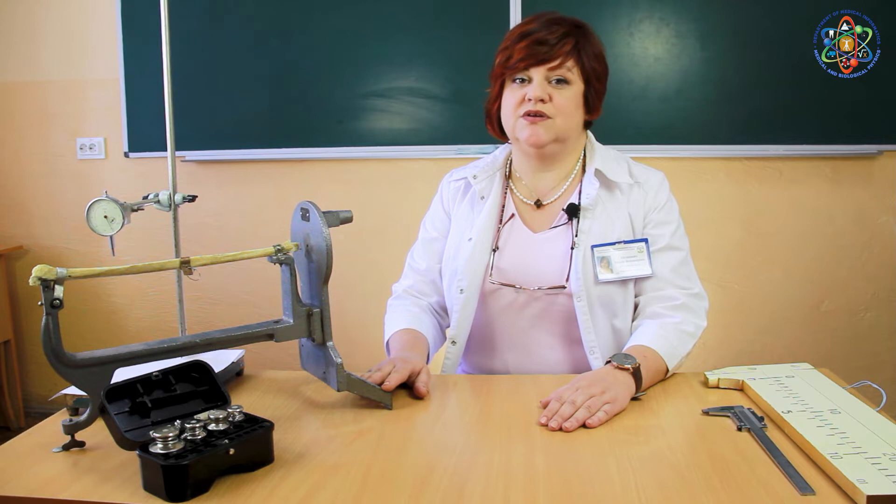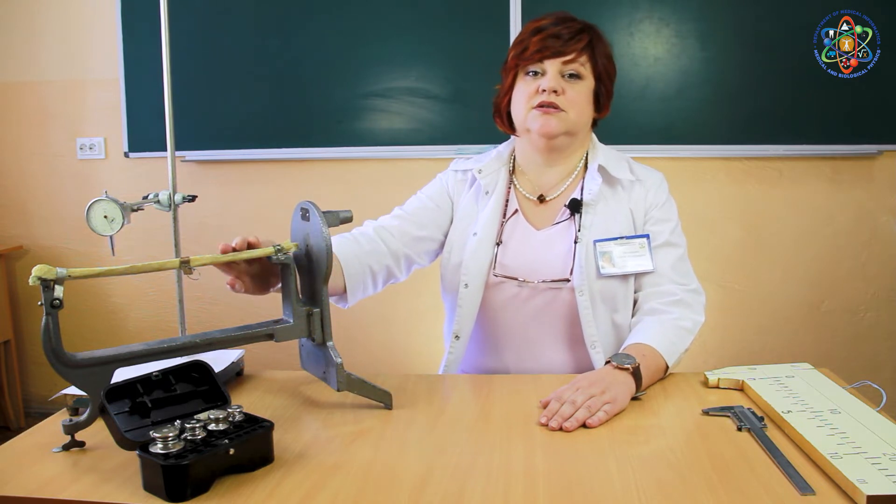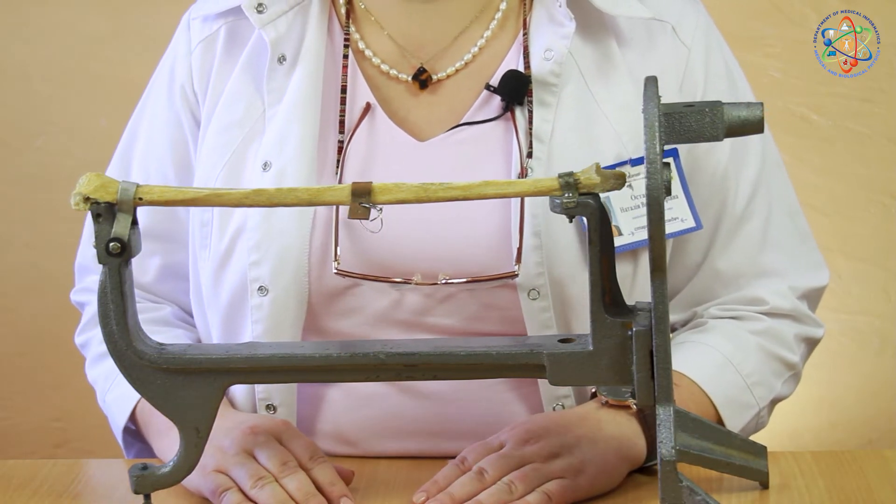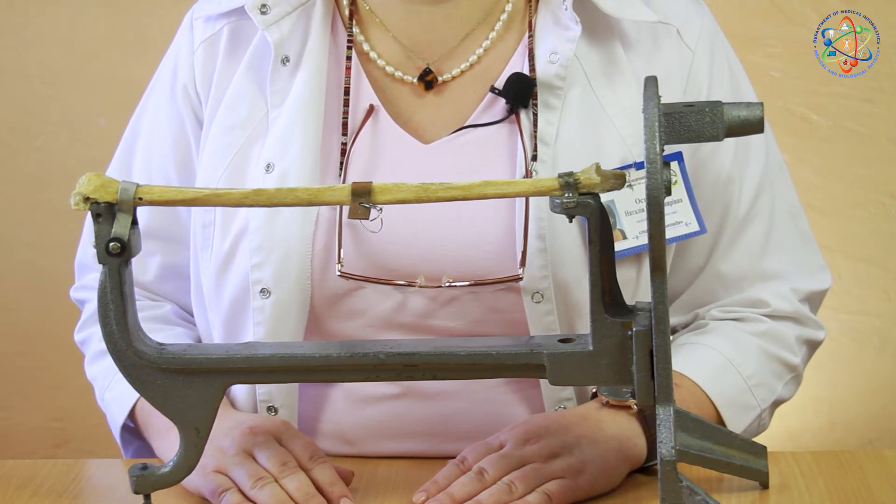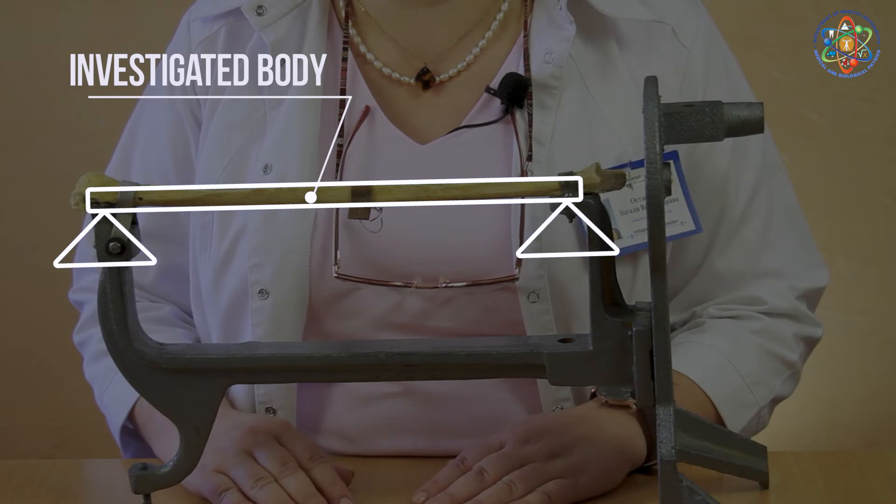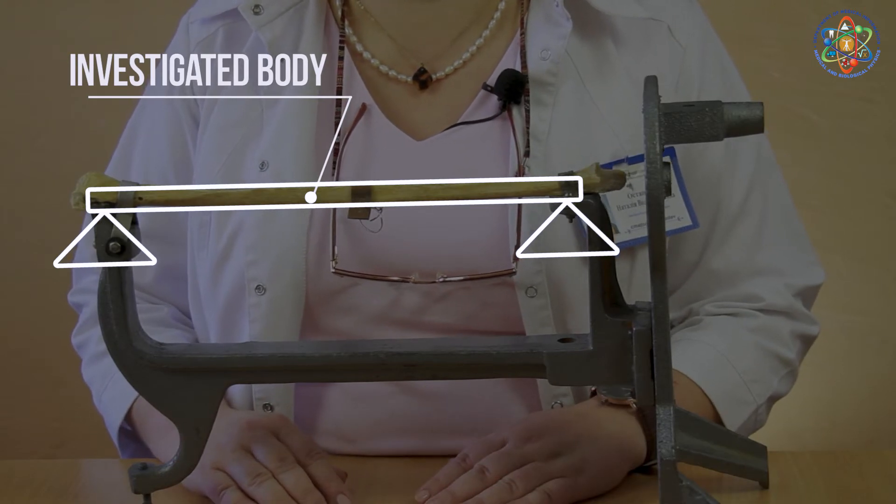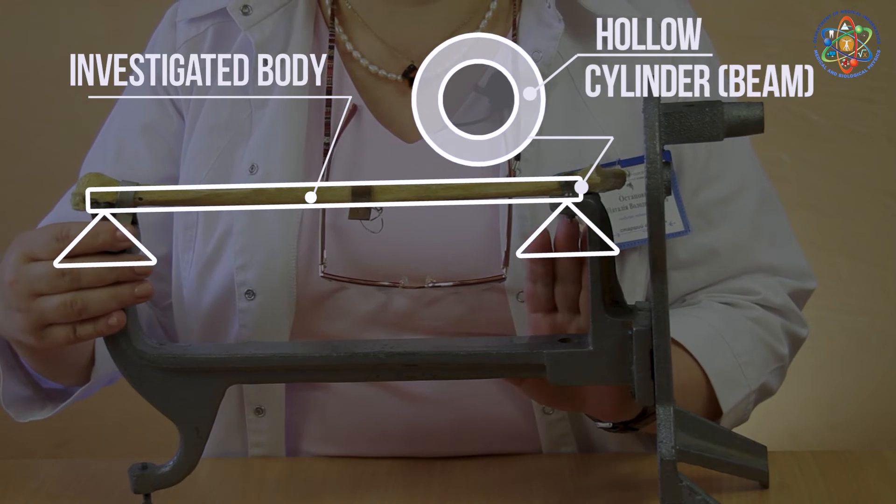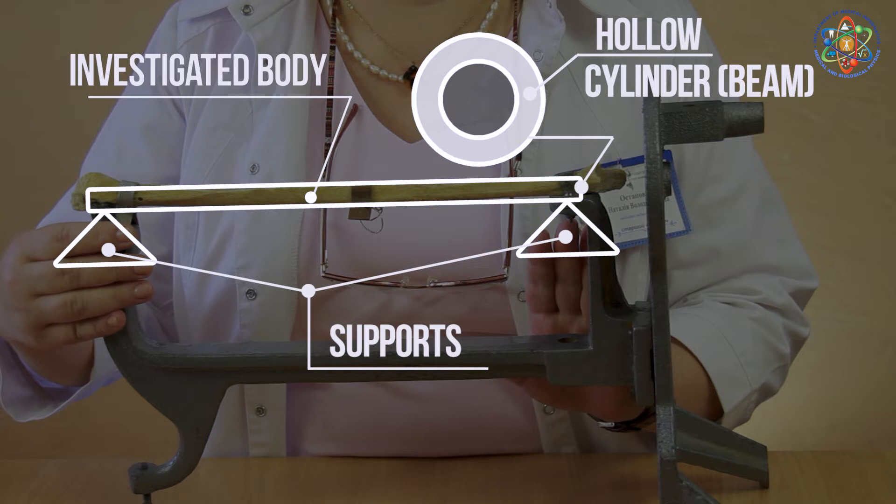Let us perform an experiment. We're going to investigate the middle part of the femur. In order to measure the Young's modulus by beam deflection method, the investigated body in the form of a hollow cylinder, a so-called beam, is placed horizontally on two supports.